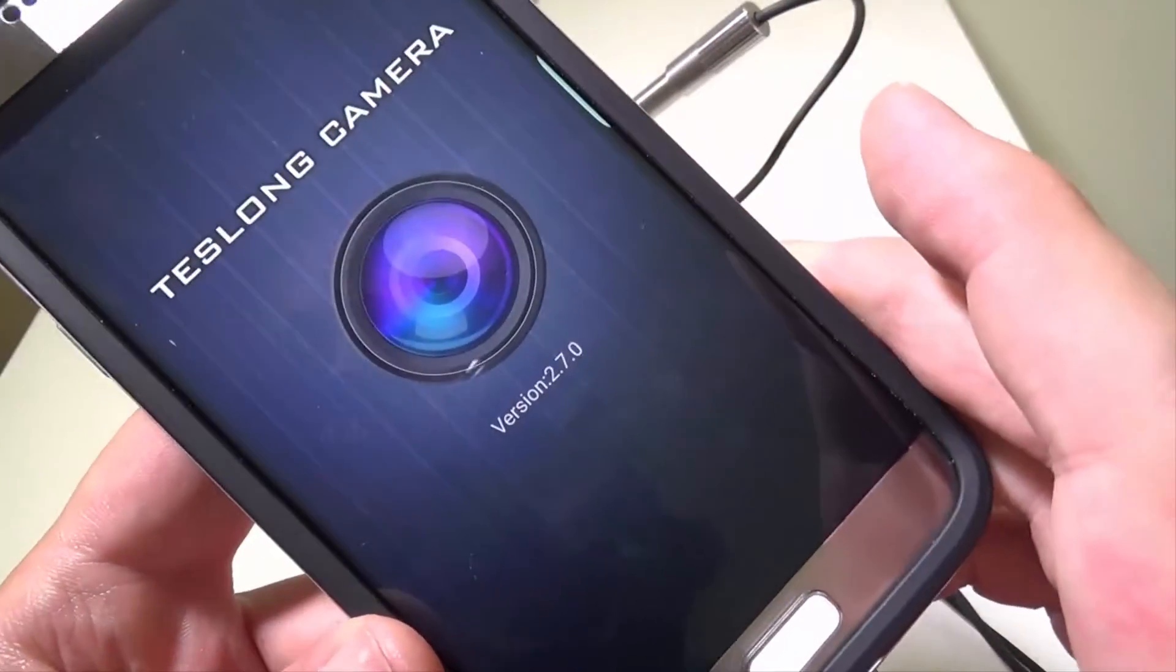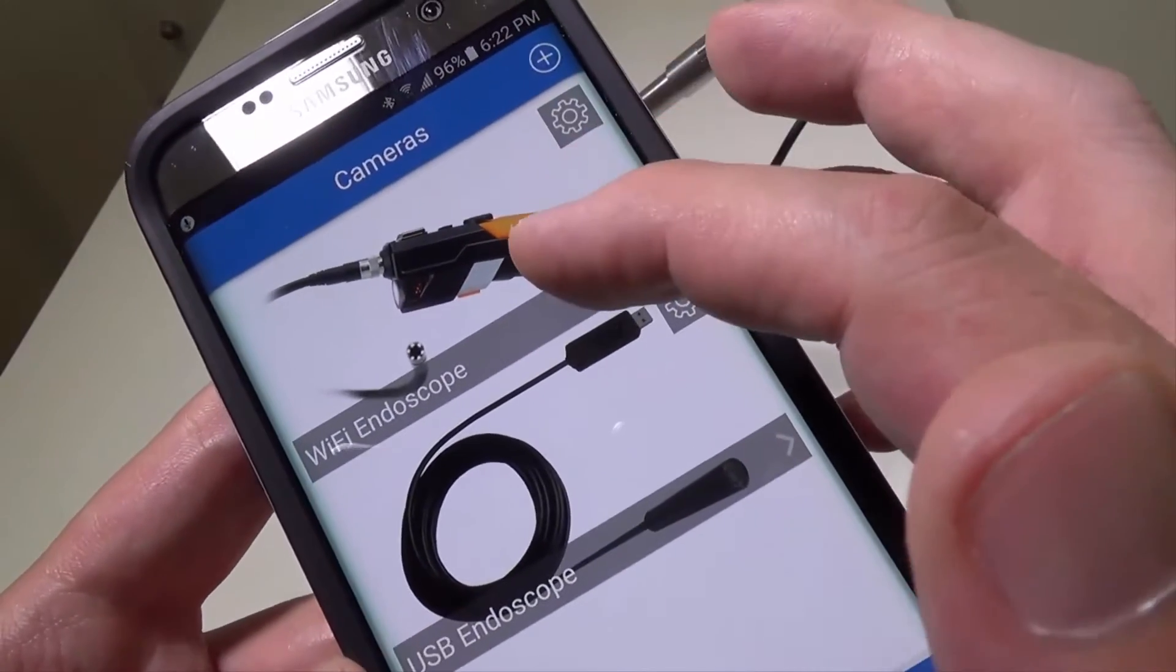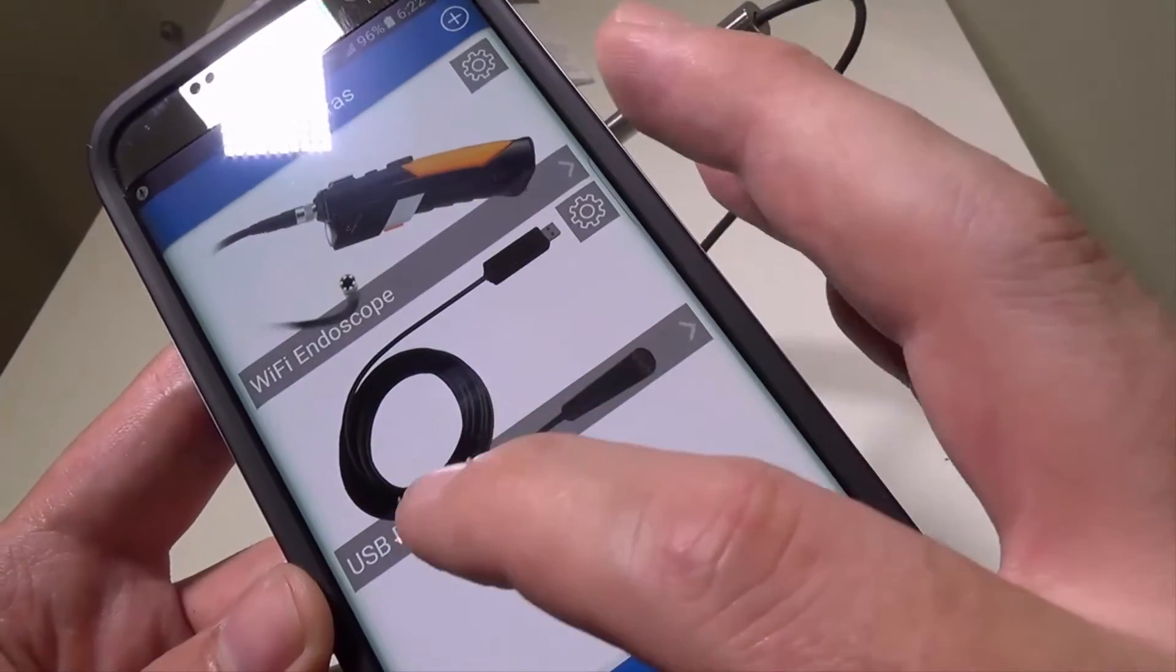The one that you're looking for is called Test Long Camera to work with this one specifically. Now ANC may work with it, I don't know for sure.